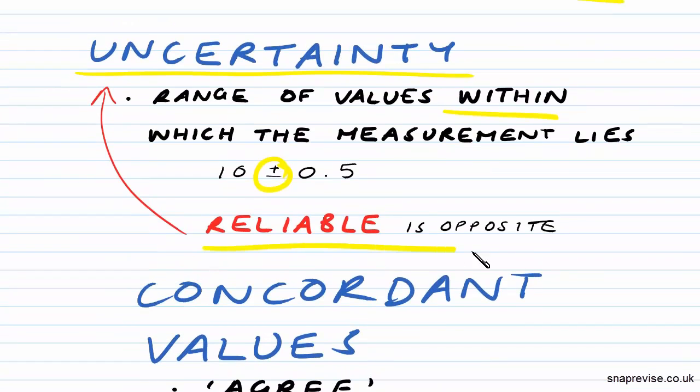Reliability is the opposite of uncertainty. So uncertain values are unreliable, whereas certain values are reliable.